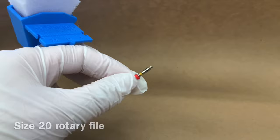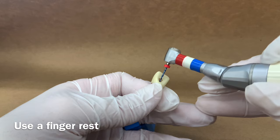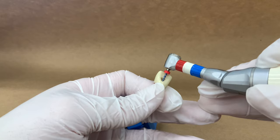Repeat these steps using the size 20 rotary file. Remember to use a finger rest, which can be on a neighboring tooth. Here I am just using my other hand as a finger rest because the tooth is not mounted.